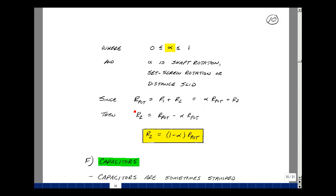So here's R2. Let's put this on the other side of the equation. Then it's R pot minus alpha R pot. So you can pull out the R pot. And so I'm left with 1 minus alpha times R pot.